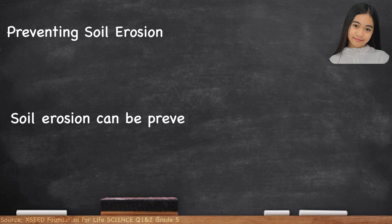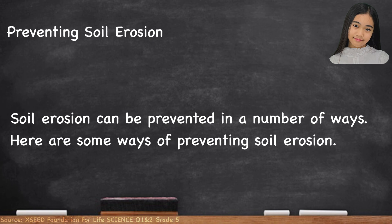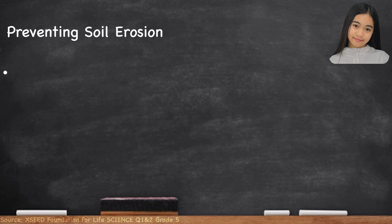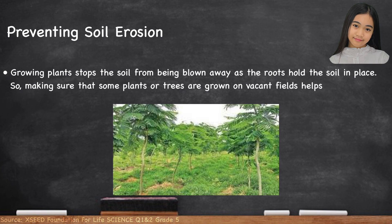Soil erosion can be prevented in a number of ways. Growing plants stops the soil from being blown away, as the roots hold the soil in place. Making sure that some plants or trees are grown on vacant fields helps in preventing soil erosion.